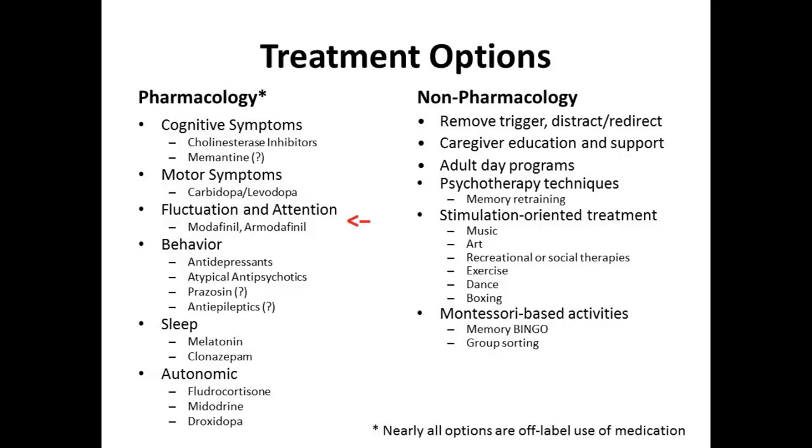For the motor symptoms, we've used the medicines of Parkinson's disease, with the caveat that when you use these medicines, you increase the potential to have hallucinations. So you have to balance out the motor symptoms versus the hallucinations. For the fluctuations and attention problems, we use stimulants — medicines used for narcolepsy to treat these symptoms. They can be quite effective, but they tend to increase anxiety. So if people have some underlying anxiety and you give them a stimulant, they tend to become very anxious, and that becomes a problem sometimes.